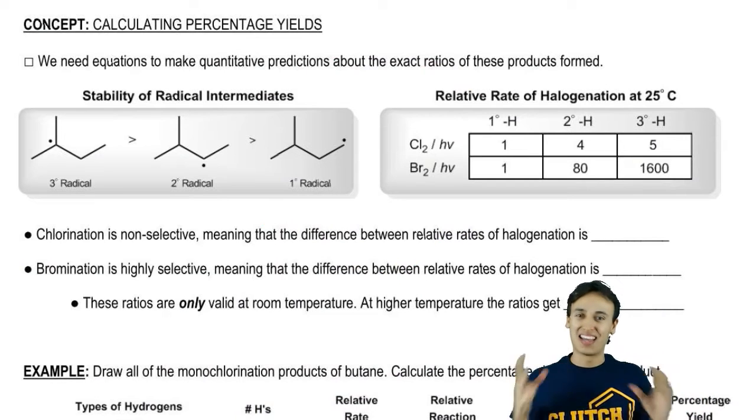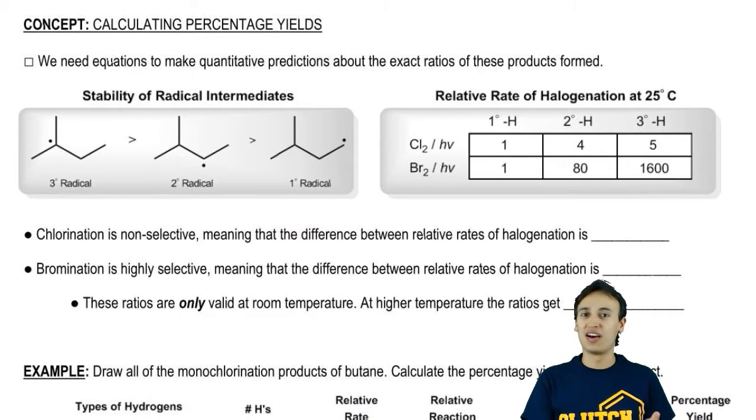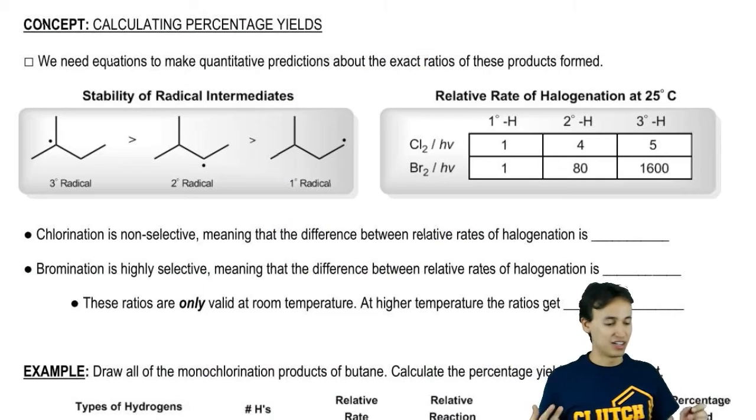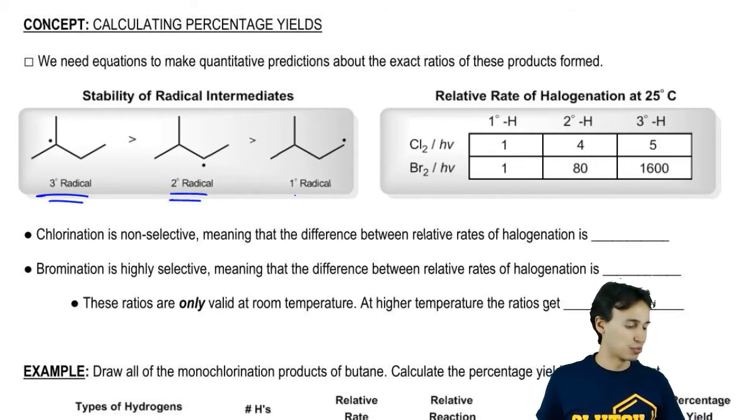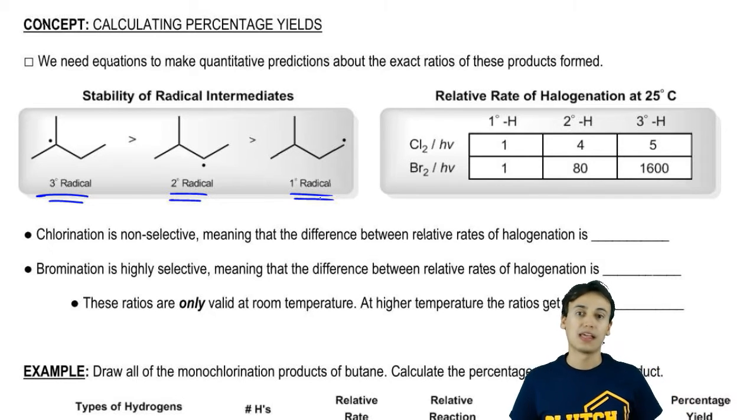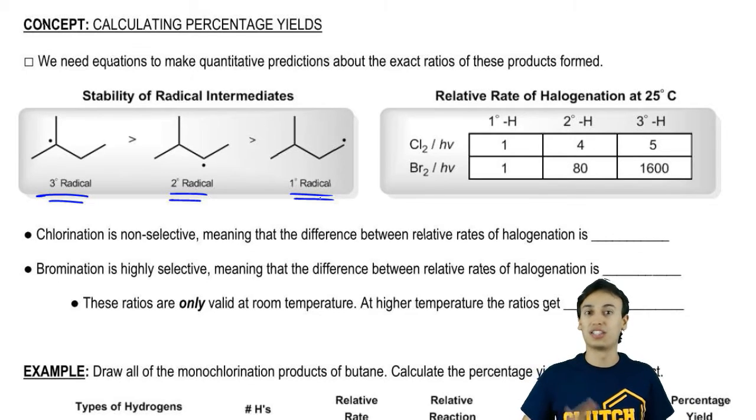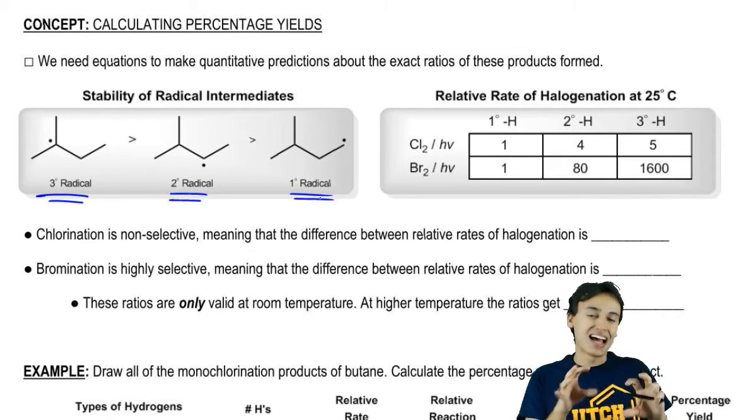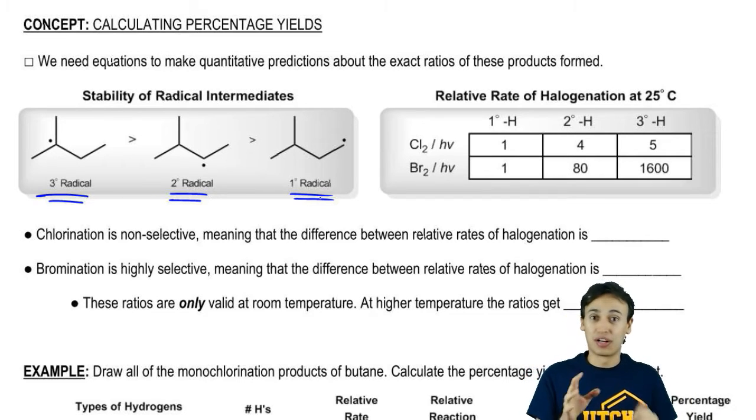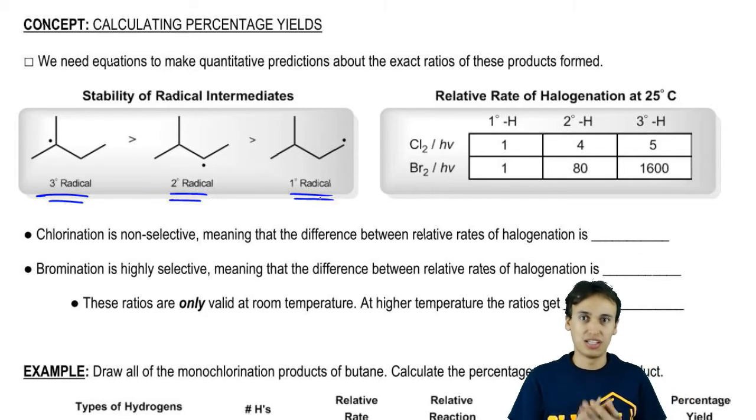Everyone knows by now the general trend of radical stability, which is that tertiary radicals are more stable than secondaries and secondaries are more stable than primaries. That's been enough for us so far. We've been able to get by and just predict the major product that way. But if we want to calculate the exact percentages of major and minor products, we're going to need equations. We're going to need some kind of quantitative method to do that.